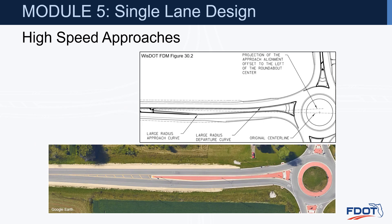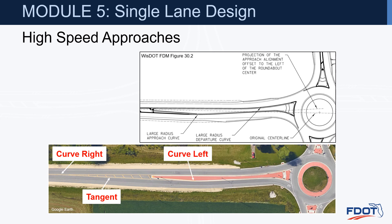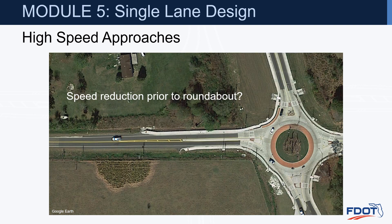An example of a well-designed entry approach uses the offset left design, with a curve that takes the driver to the right, then a tangent, a curve to the left, another tangent, and then the controlling curve into the roundabout. The question is whether there is adequate speed reduction prior to the roundabout. A straight-in entry design places all speed control right at the entry, so we want to get the driver to slow down before that point.